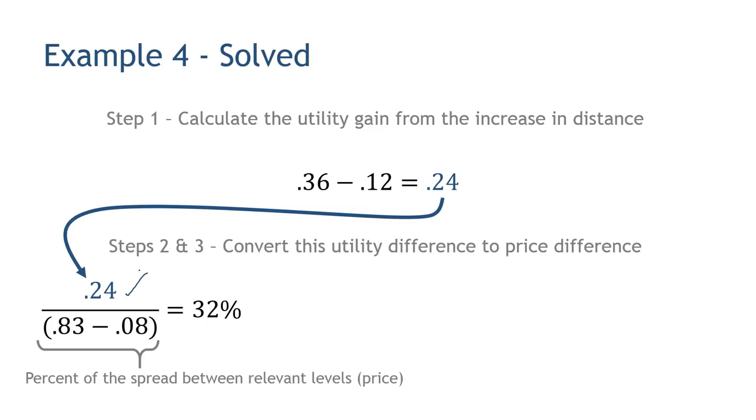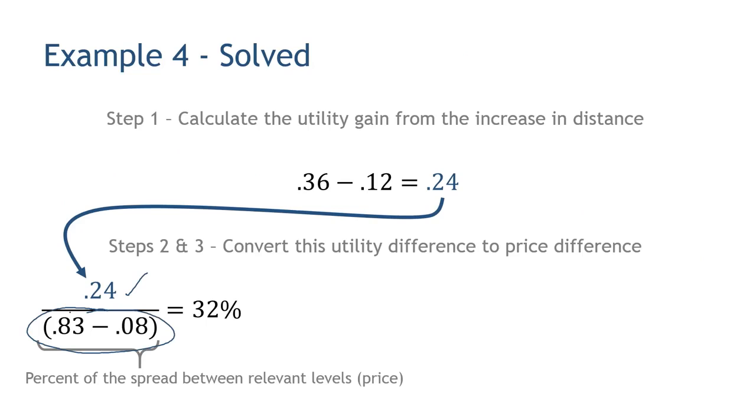We know the new price is going to be in the $8.99 to $10.99 range because 0.24 is smaller than the overall utility range between those two price points. What we need to determine is exactly how far into that range we need to go. To do that, we essentially convert it into a percent along that range — we take 0.24 and divide it by the spread between the two price points of $8.99 and $10.99. The resulting calculation gives you 32%, meaning we're moving 32% up in that price range to break even and take back the utility gain consumers received on distance.